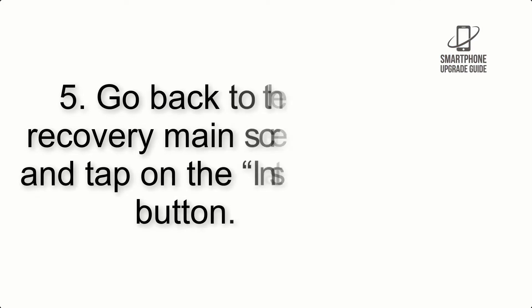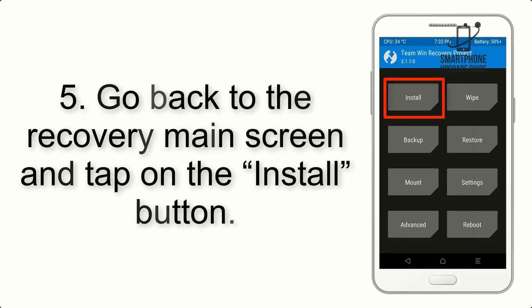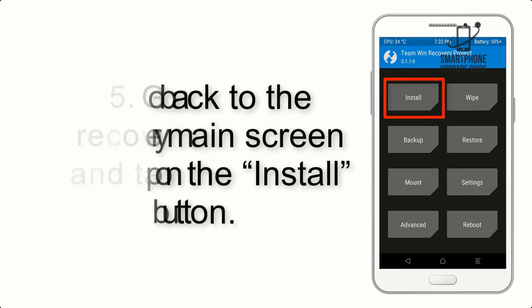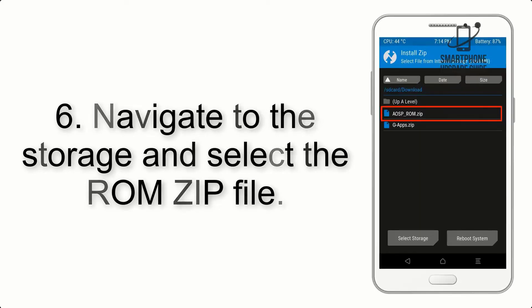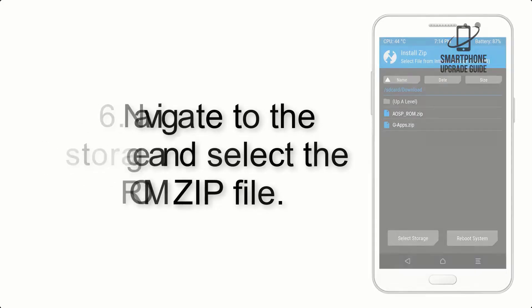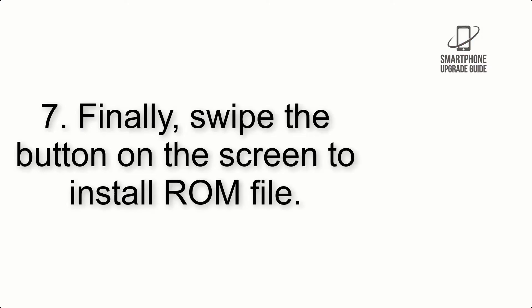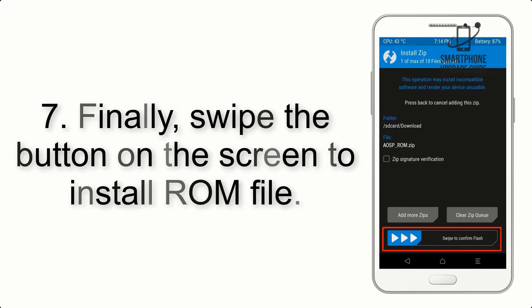Step 4: Swipe the button to wipe the device. Step 5: Go back to the recovery main screen and tap on the Install button. Step 6: Navigate to the storage and select the ROM zip file.